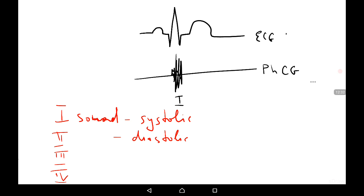The second sound is seen just after the T wave, following the repolarization of the ventricles. Its amplitude is lower and it is softer than the first sound. The third sound is explained by the passive filling of the ventricles with blood, and the fourth sound is produced by the systole of the auricles — it is also quiet with a low amplitude.